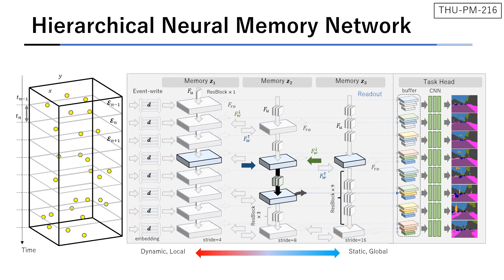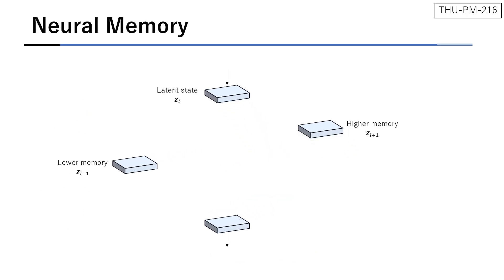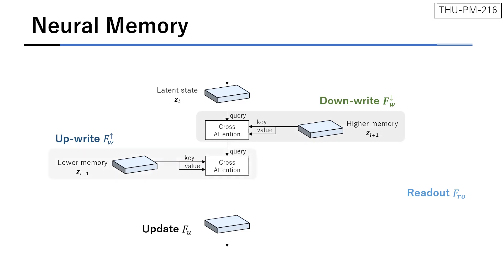Next comes the details of the operations. The memory has four basic operations: down-write, up-write, update, and readout. Down-write operation writes the high-level memory state using cross-attention. Up-write operation writes the low-level memory state similarly. Update operation updates the latent state using residual blocks. Finally, readout operation computes the output feature for the task using a convolution layer.